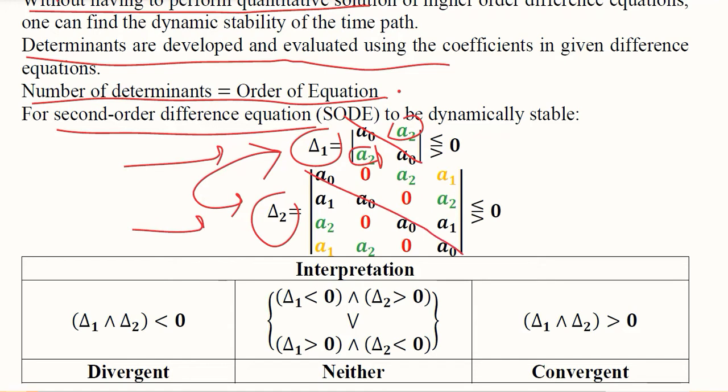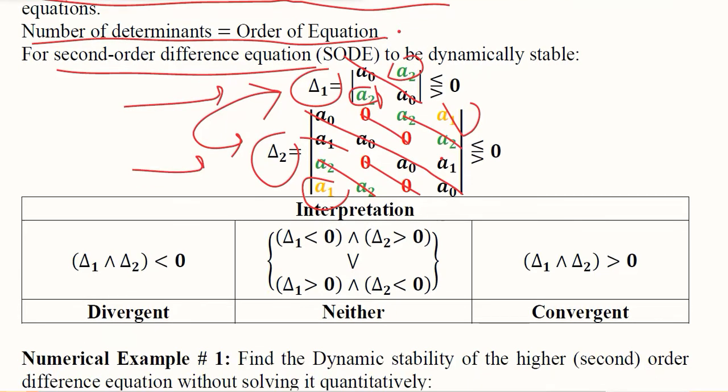This is a₀, this is zero, this is a₂, and these are the values that are a₁. It has a certain pattern that one needs to remember in order to apply it in a given case of difference equation.